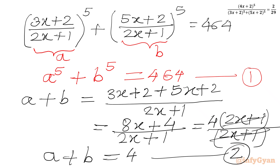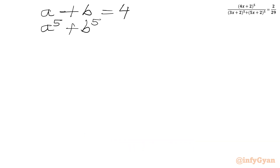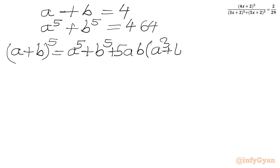We have two equations to solve for a and b. Equation 1: a^5 plus b^5 equals 464. Equation 2: a plus b equals 4. Let's use the binomial expansion of (a+b)^5, which can be written as a^5 plus b^5 plus 5ab times (a^3 plus b^3) plus 10a^2b^2 times (a plus b).